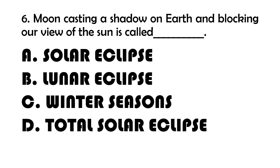Number 6. The moon casting a shadow on Earth and blocking our view of the sun is called blank. A. Solar Eclipse. B. Lunar Eclipse. C. Winter Seasons. D. Total Solar Eclipse.